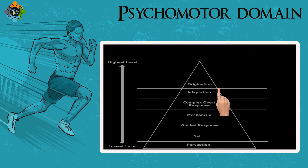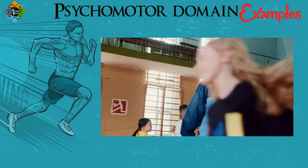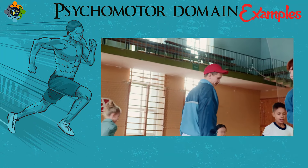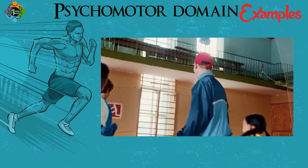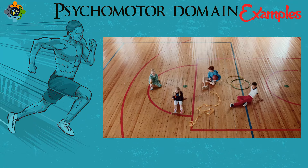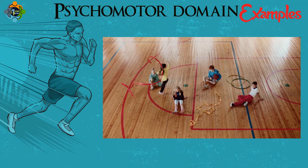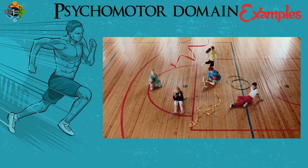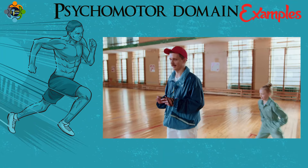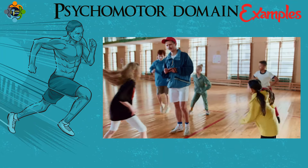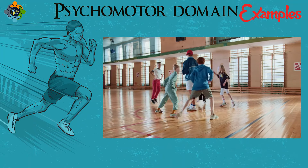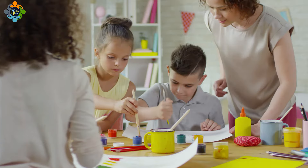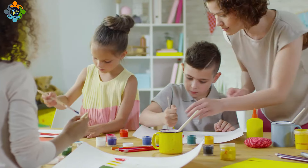Development in this domain progresses from basic movements — perception — to skilled actions and origination, where new movements are created. Consider a PE class learning a new sport: initially students understand basic movements, but as they advance, they might develop new strategies or movements unique to their skill set. Educators can use this to help students develop physical skills and precise movements through structured practice and feedback.